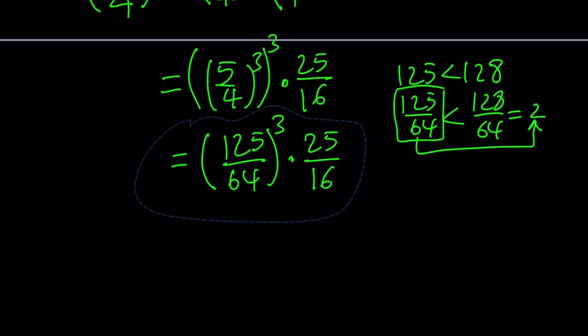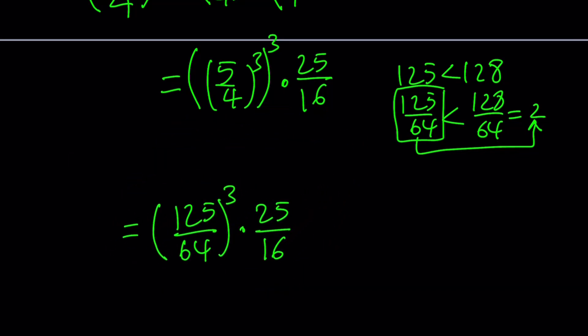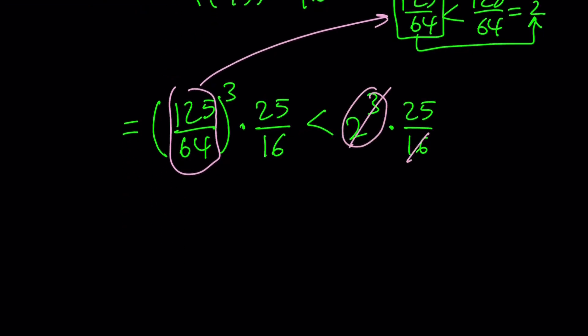Since this is less than 2, its cube is less than 2 cubed times 25 over 16. This is 8 times 25 over 16. 8 goes into 16 twice, giving me 25 over 2 which is 12.5. So this expression is less than 12.5, and I want this to be less than 16 and it is.